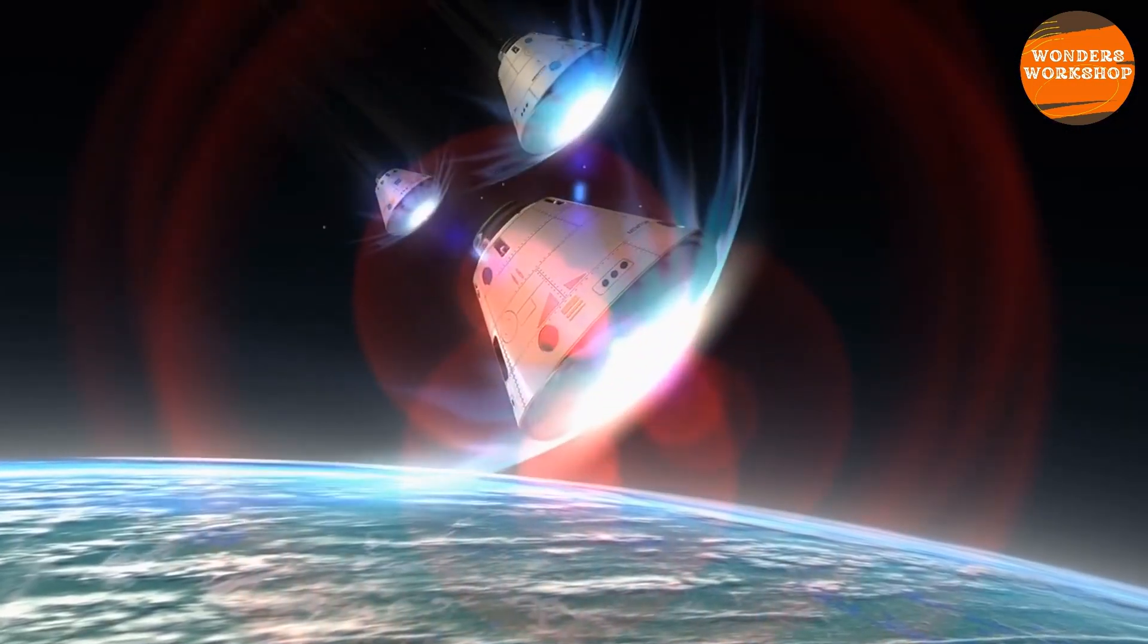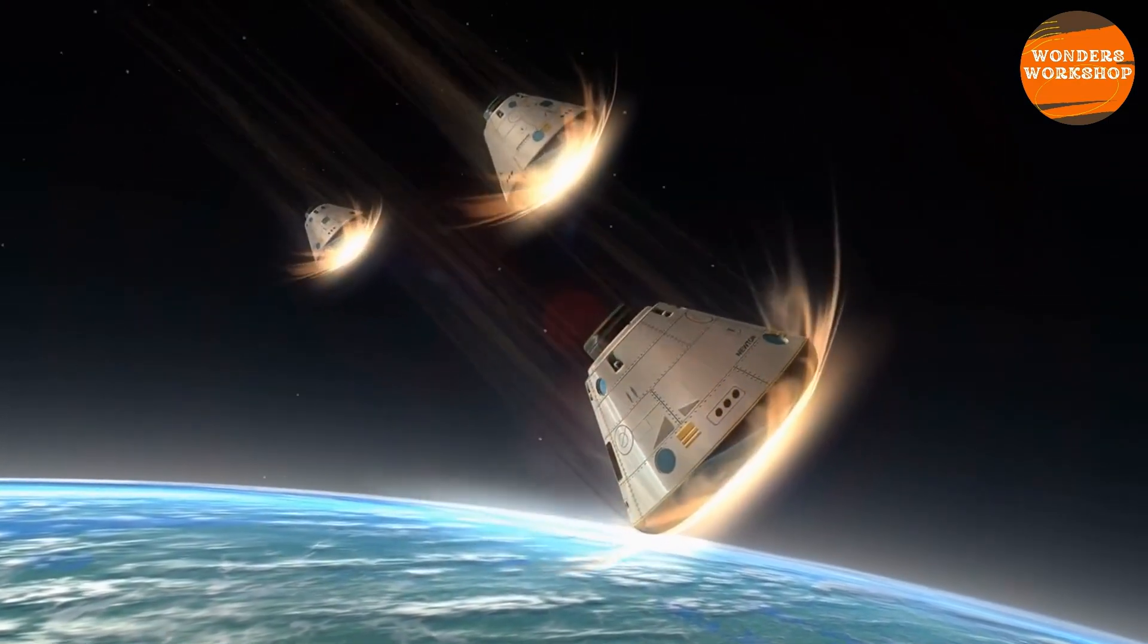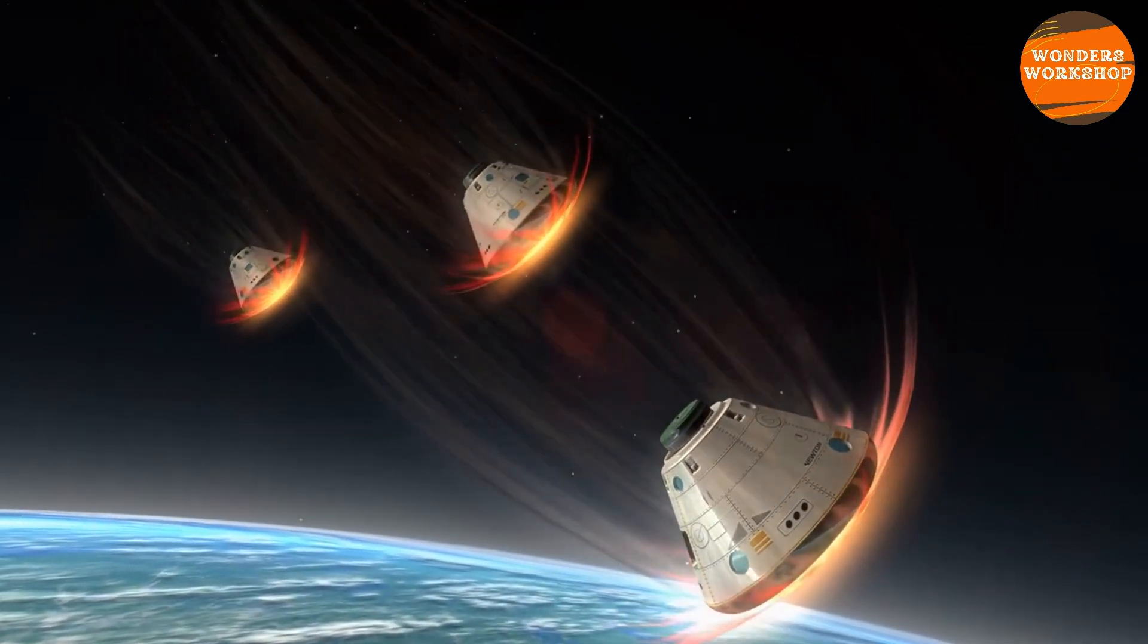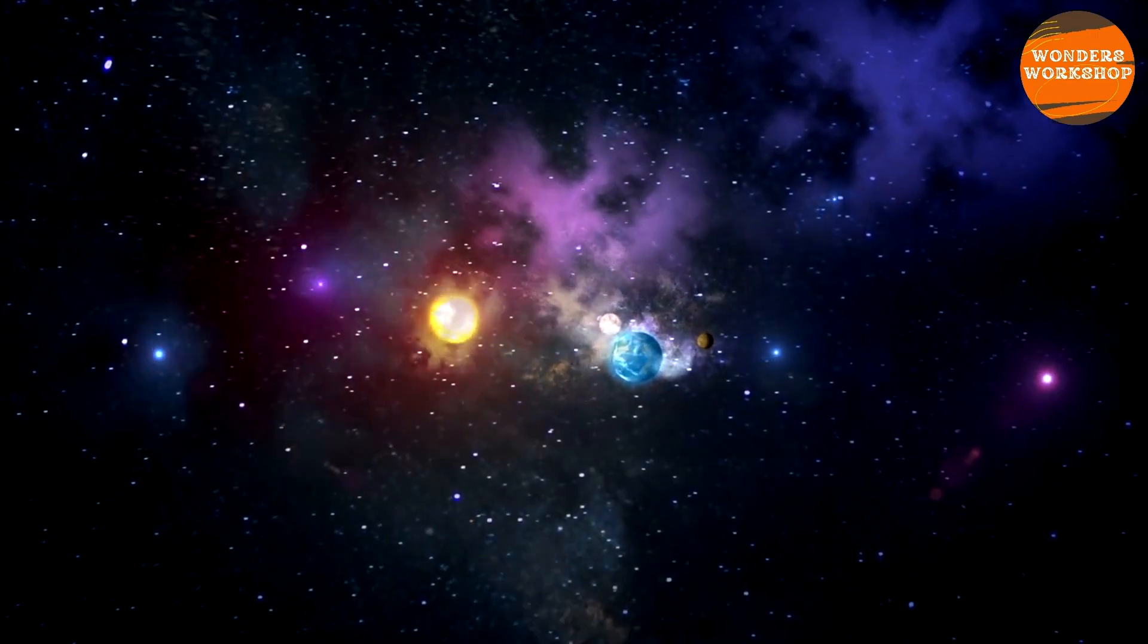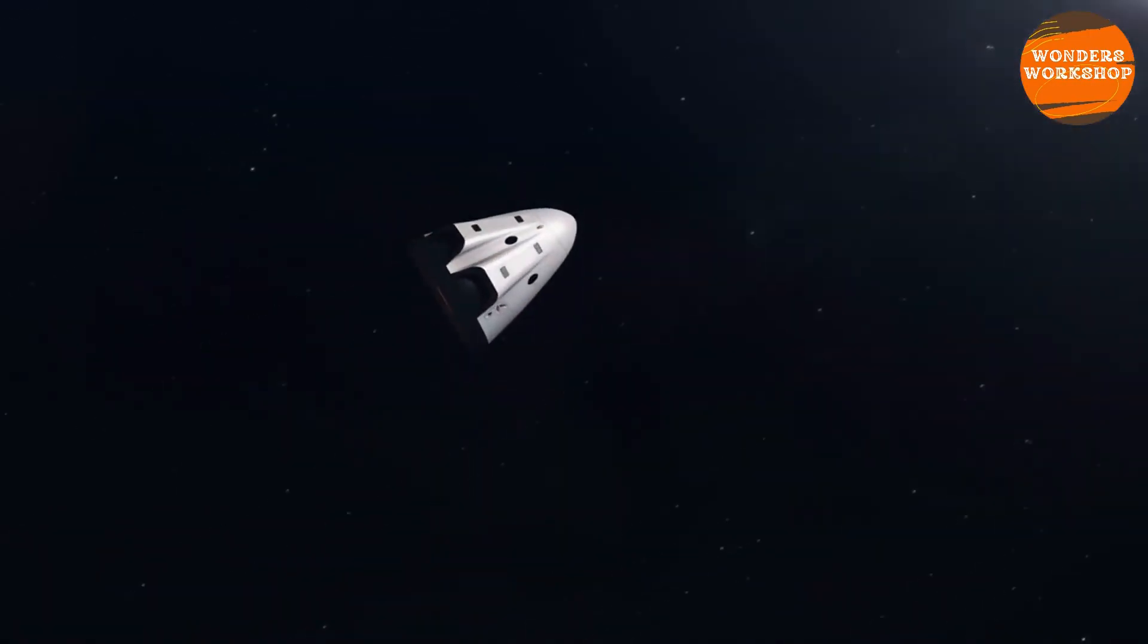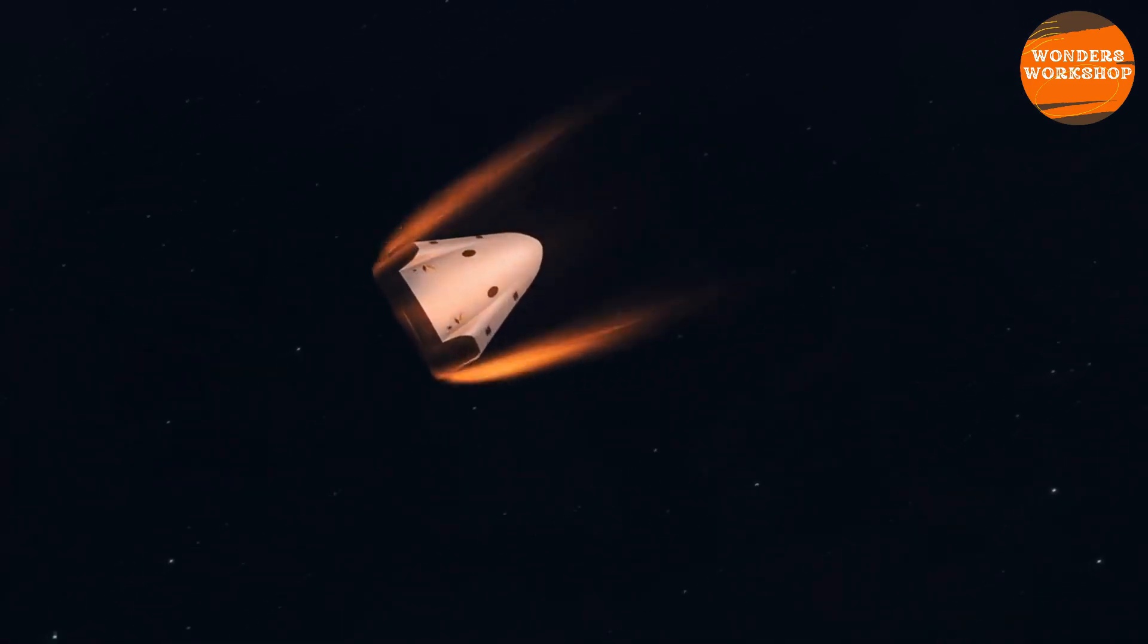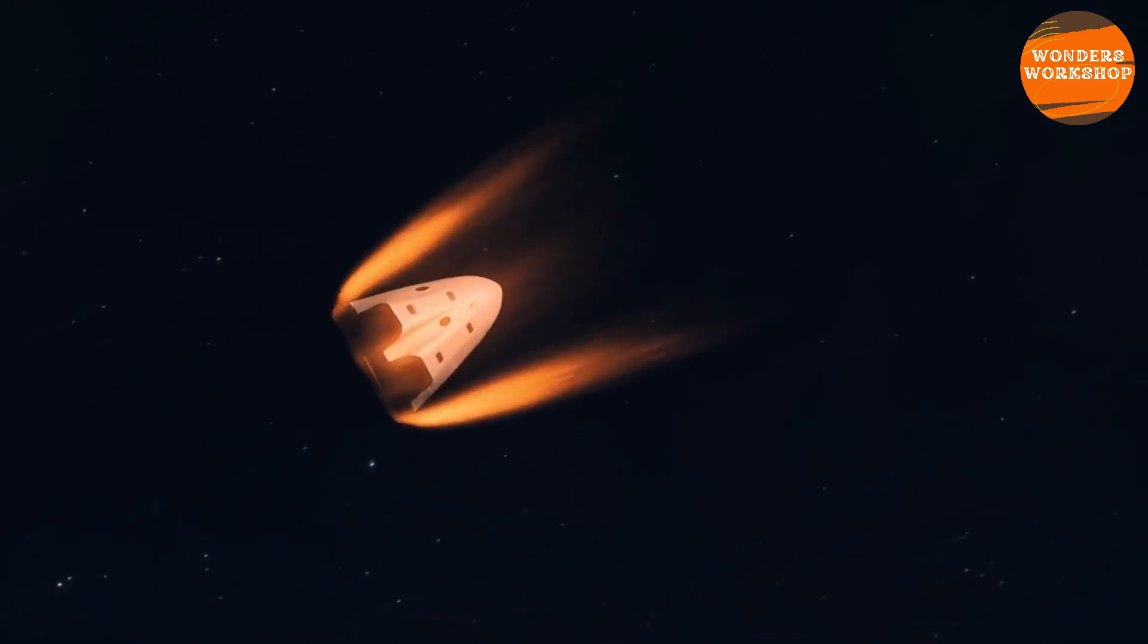Before discussing this new American spaceplane, it is right to briefly mention how such a vehicle works and why it is different from a traditional capsule. The main feature of a spaceplane is its ability to maneuver both in the atmosphere and in space. While a capsule performs a ballistic re-entry, aiming at a specific entry point that coincides with a specific landing point, a spaceplane can glide in the atmosphere.